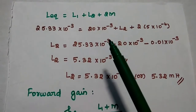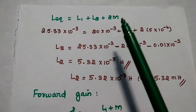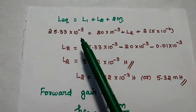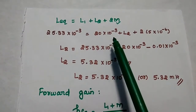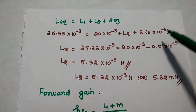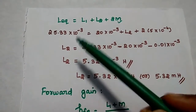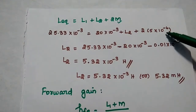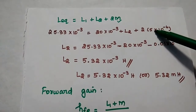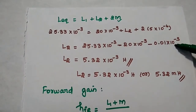After getting the L_equivalent value, we use the formula L_equivalent equals L1 plus L2 plus 2M, since mutual inductance is given. So 25.33 into 10 to the power minus 3 equals 20 into 10 to the power minus 3 plus L2 plus 2 into 5 into 10 to the power minus 6. We convert 10 into 10 to the power minus 6 to get 0.01 into 10 to the power minus 3, then move the known terms to the other side to find L2.